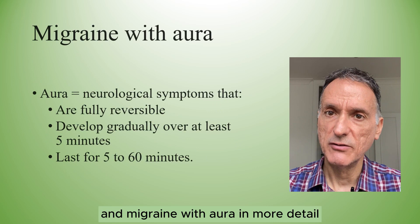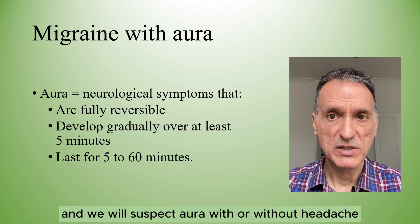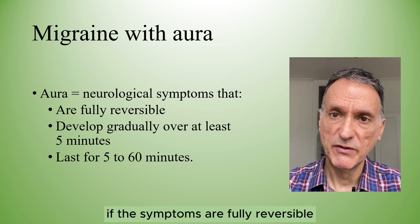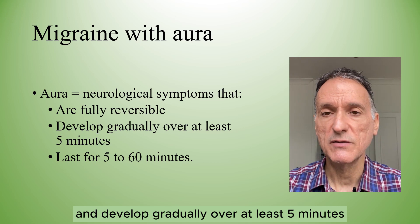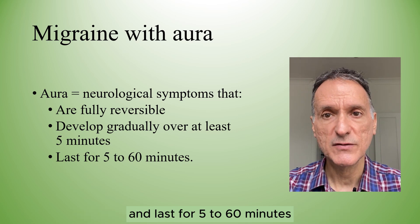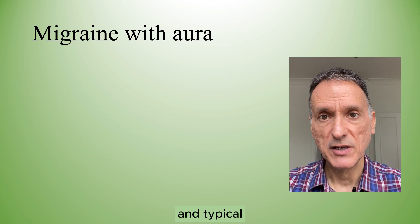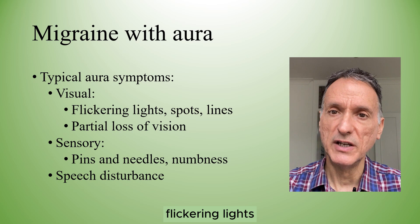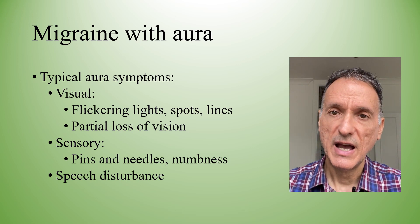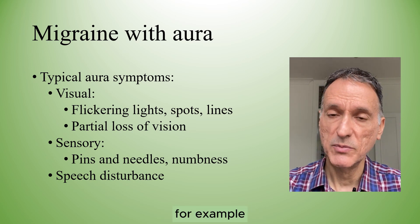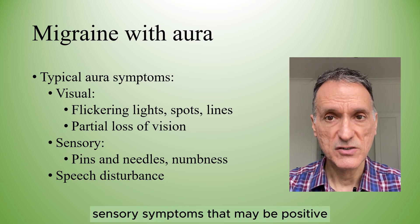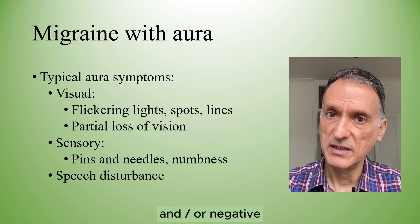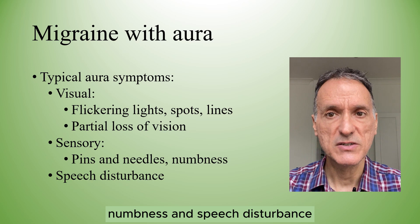Now let's have a look at migraine with aura in more detail. We will suspect aura with or without headache if the symptoms are fully reversible, develop gradually over at least 5 minutes, and last for 5 to 60 minutes. Typical aura symptoms include visual symptoms that may be positive, for example flickering lights, spots or lines, and/or negative, for example partial loss of vision. Sensory symptoms may be positive, for example pins and needles, and/or negative, for example numbness and speech disturbance.